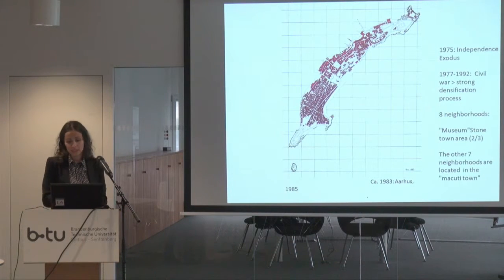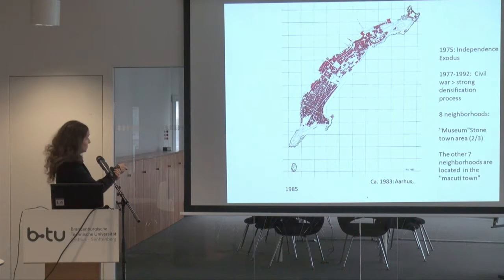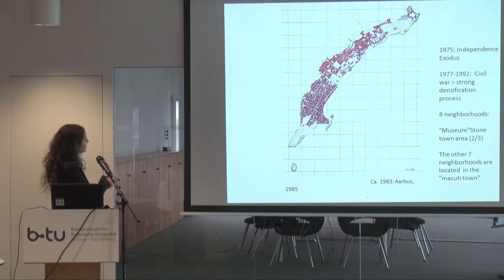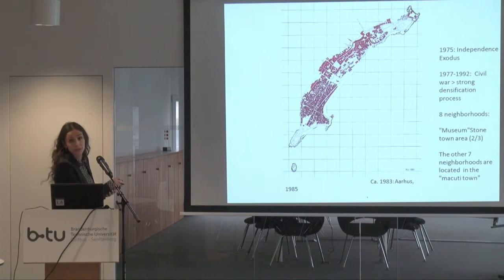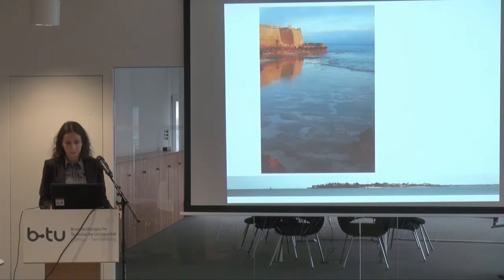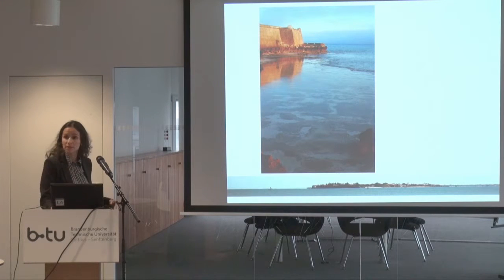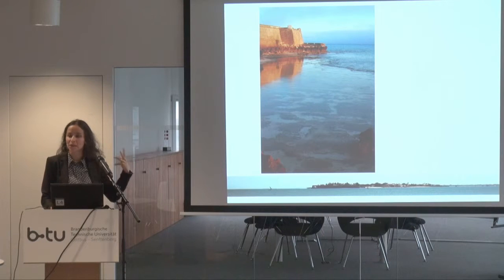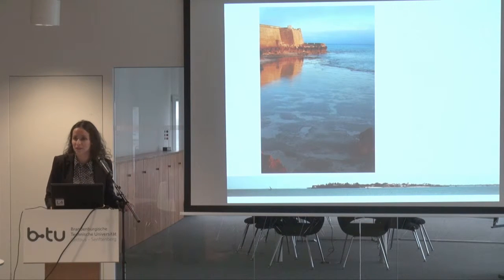Nowadays, one neighborhood is called Museum because of its characteristics. The other part of the city — the two-thirds that belongs to the Makuti town — has seven neighborhoods. It is very dense but very alive. And then there is the fortress of San Sebastian in the north, which gives you an idea of how incredibly beautiful the island is.